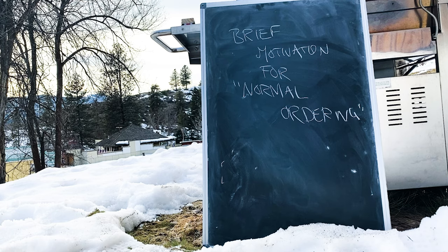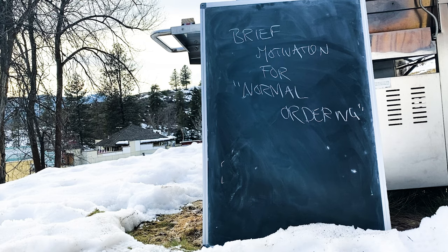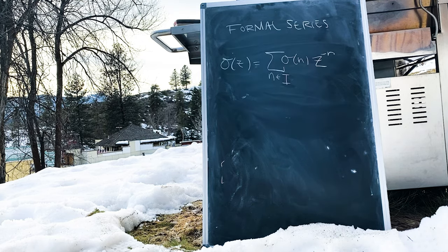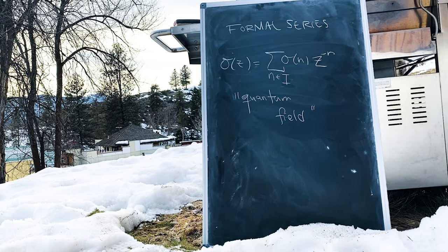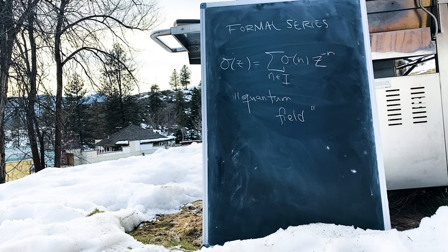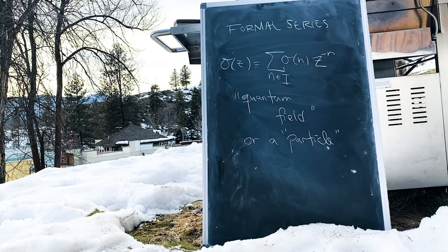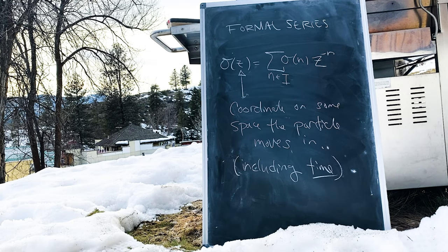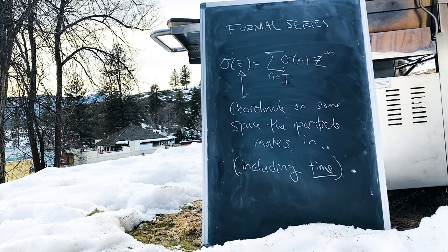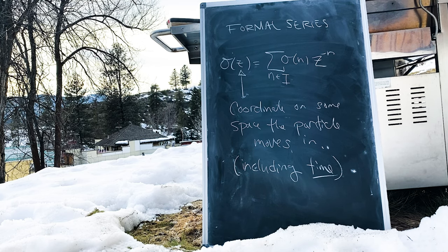Products of operators, especially ones defined as sums or even infinite sums, can be confusing things to define. Perhaps you recall all the details involved with sumability and the existence of products of formal series that we studied in section 30. In quantum field theory, formal series like sigma of z have a physical meaning. It represents the presence of a particle, where the formal variable z actually parameterizes a coordinate in spacetime, that is, a time and a place.